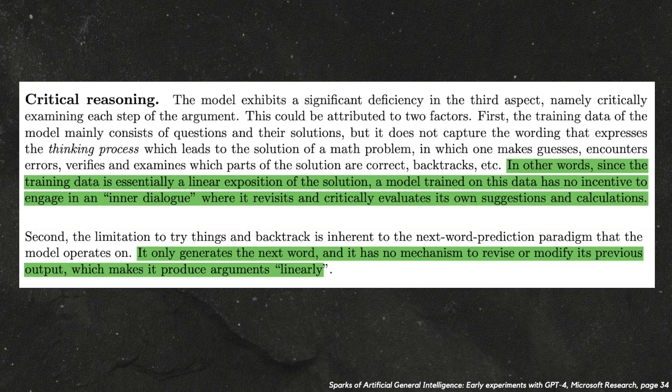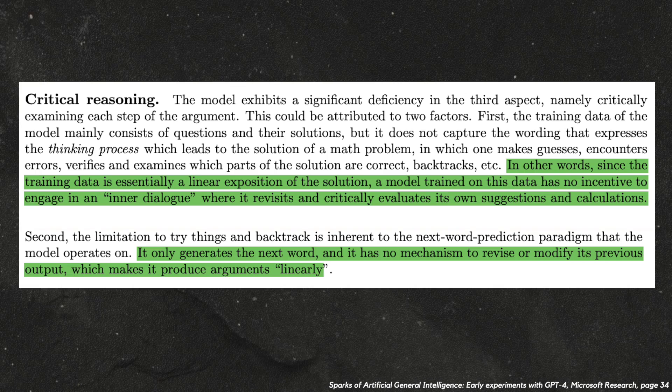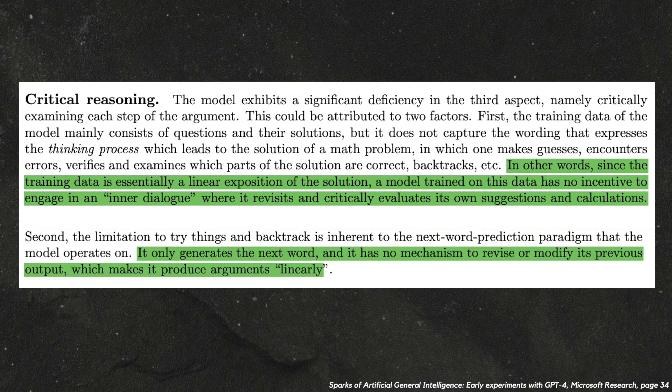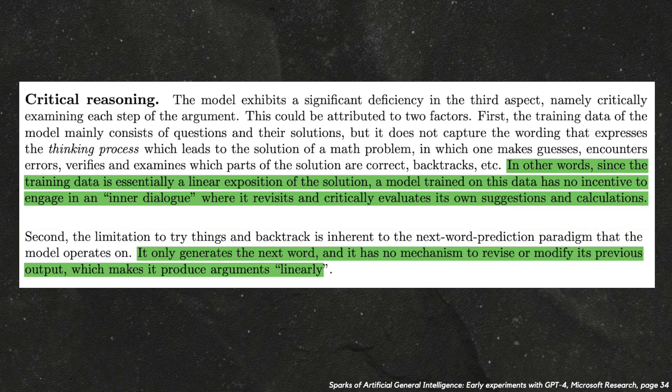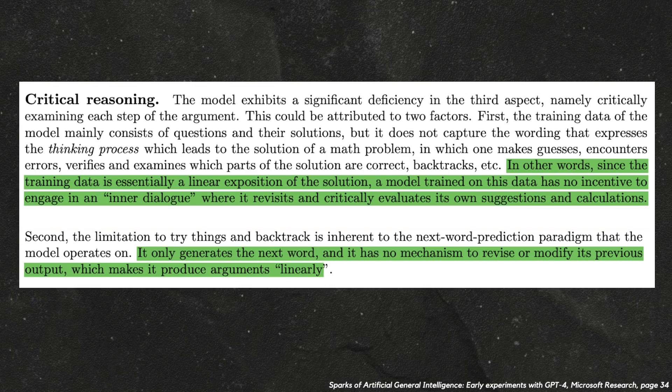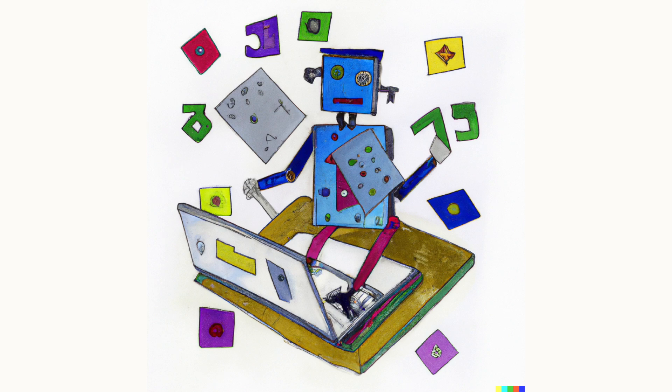It doesn't make guesses or backtrack because it can't backtrack. When predicting the next word, it just needs to move forward in a straight line. In essence, it's bad at math because it lacks the ability to play around.